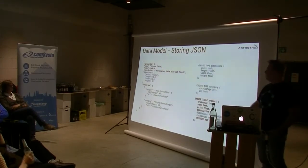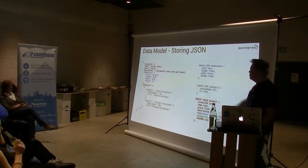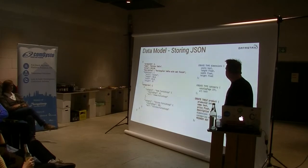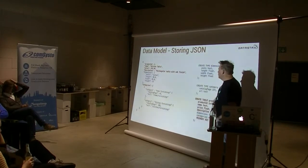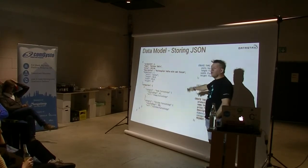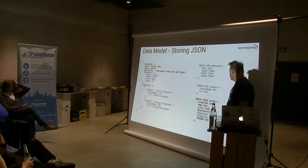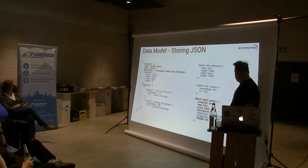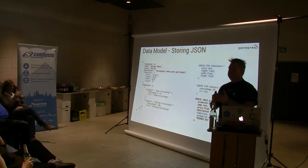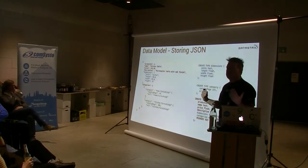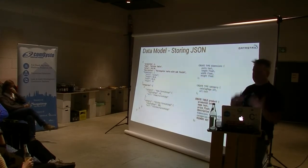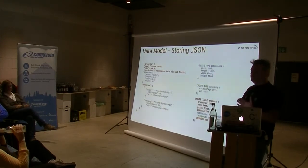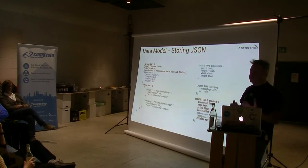What kind of interesting data models can this lead to? How about storing JSON? This is an actual real-world example — a product catalog in JSON format. I created a type called 'dimensions' which fits that part of the JSON field, and a type called 'category' which fits the categories. In the table I have my dimensions as a single type, and a map of categories so I can have one or many categories assigned to a product. I can now store JSON directly in Cassandra, but it's fully typed and schema-based — and that really makes a difference.